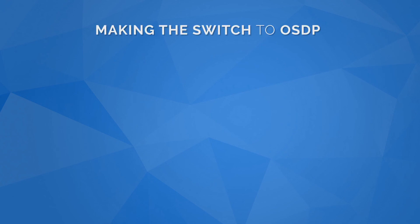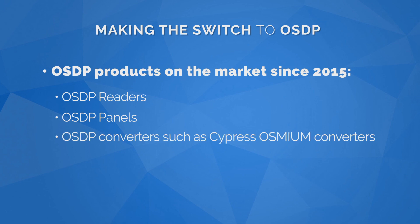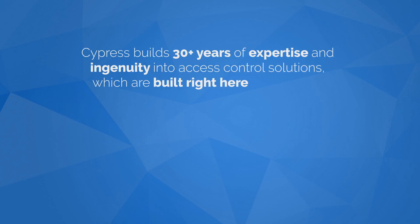Transitioning to OSDP is easier than you might think. OSDP-enabled products have been on the market since 2015. OSDP readers and panels are currently available, as well as OSDP converters such as the Cypress line of Osmium converters. Cypress builds 30-plus years of expertise and ingenuity into access control solutions, which are built right here in the USA.